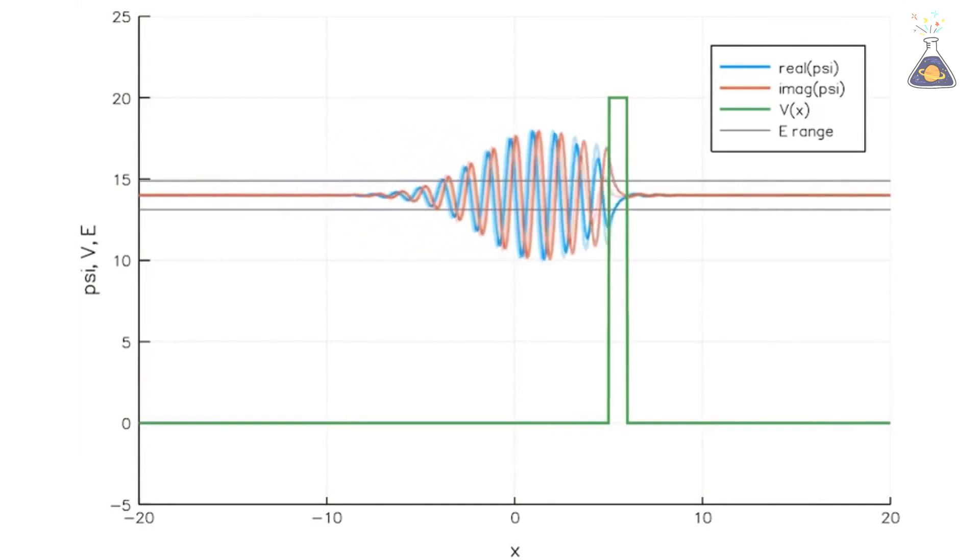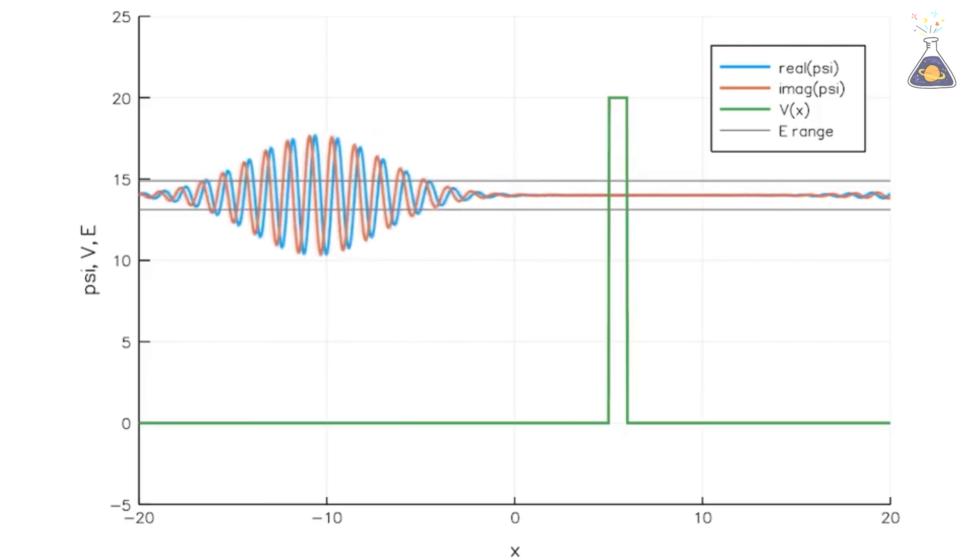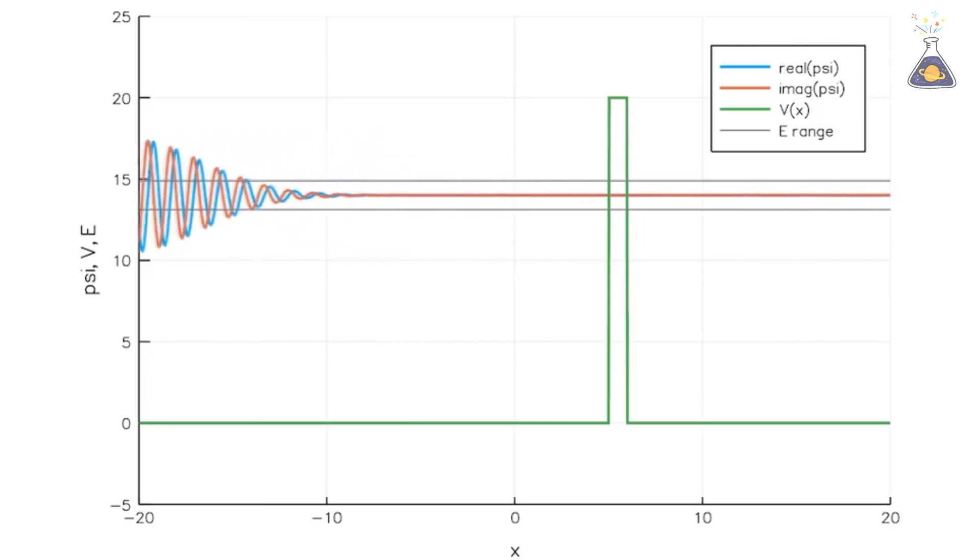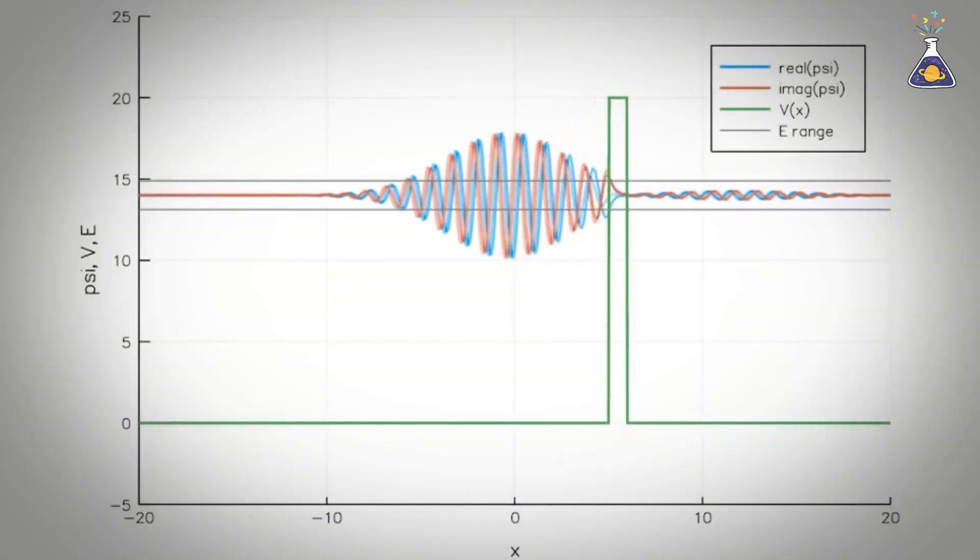Quantum tunneling occurs when electrons, despite lacking enough energy, pass through barriers they shouldn't be able to cross. In simpler terms, it's like walking through a solid wall without breaking or climbing over it. It sounds impossible, but in the quantum world, it's very real.